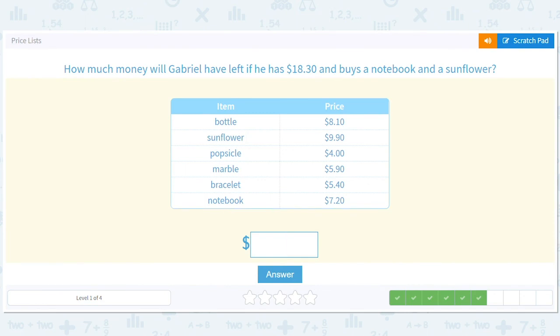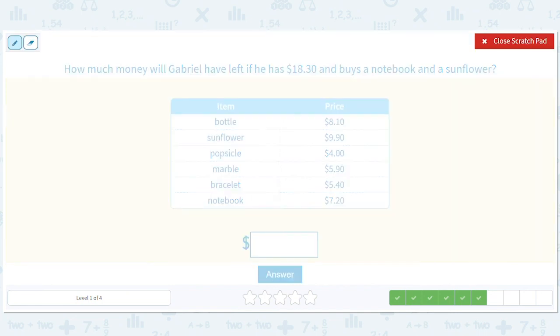How much money will Gabriel have left if he has eighteen dollars and thirty cents and buys a notebook and a sunflower? Let's buy those two things and see what happens. We do 9.90 plus 7.20. Look, a zero here. Nine plus two is eleven and we'll get a one here, and that'll give us seventeen. So that's how much it's gonna cost for those two things - seventeen ten.